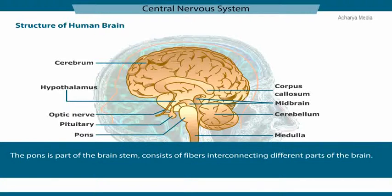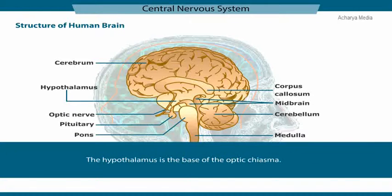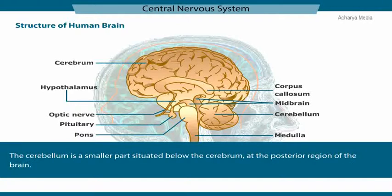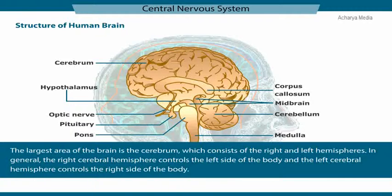The pons is the part of the brain stem that consists of fibers interconnecting different parts of the brain. The corpus callosum is made of nerve fibers present deep in the brain and connects the two halves of the cerebral hemispheres. The hypothalamus is at the base of the optic chiasma. The cerebellum is a smaller part situated below the cerebrum at the posterior region of the brain. The medulla oblongata, a part of the brain stem, connects the brain with the spinal cord.